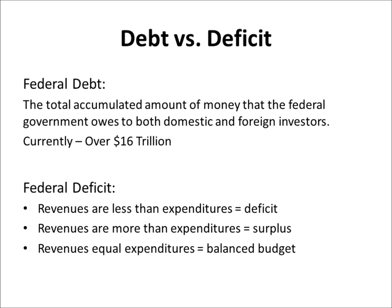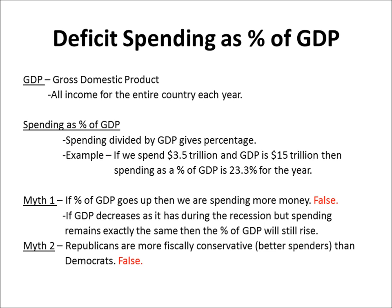Now let's talk for just a minute about the terms we use to come up with some of these numbers — some of these formulas. Deficit spending as a percentage of GDP is a very popular one that you hear all the time, mostly in sound bites with very little explanation. GDP refers to gross domestic product — that's all the income for the entire country for an entire year. Spending as a percentage of GDP: you take the spending, the budget, divide by the GDP, and it gives you a percentage. For example, if we spend $3.5 trillion and GDP is $15 trillion, the spending as a percentage of GDP is 23.3%, which is high.